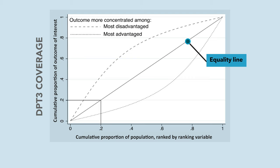Now check out the highlighted angle. We can interpret that 20% of our population, which comprises the first quintile, have exactly 20% of the cumulative proportion of our outcome. In other words, 20% of the vaccines that were given to our population were received by the 20% poorest group.